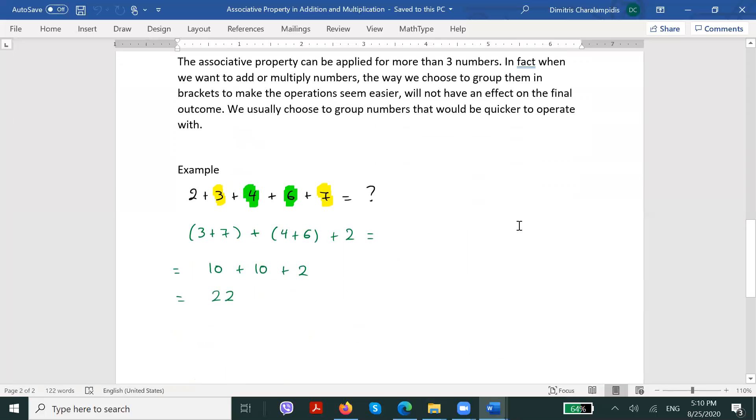The associative property can be applied for more than 3 numbers. In fact, when we want to add or multiply numbers, the way we choose to group them in brackets to make the operation seem easier will not have an effect on the final outcome. Usually, we choose to group numbers that would be quicker to operate with.